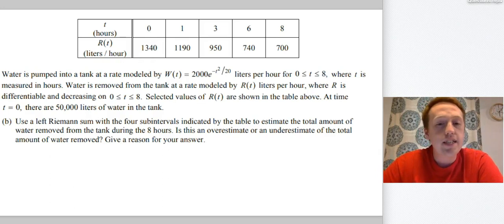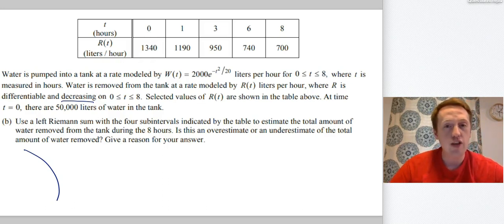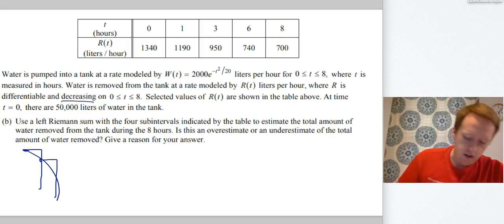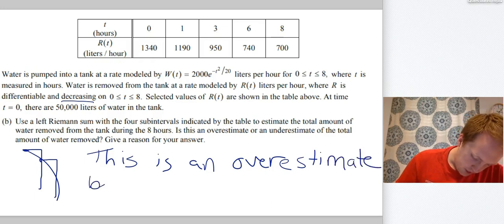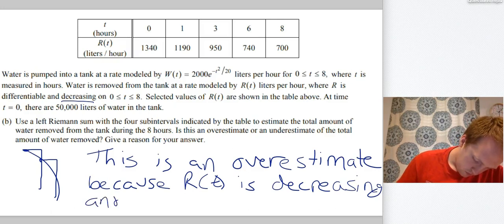Now I'm going to erase this stuff because I have another part to answer. The next thing it asked was, is this an overestimate or an underestimate of the total amount of water removed? So what we need to do is think about left Riemann sums and we know that R of T is decreasing. It says decreasing right here. So I always sketch this out for myself. So I'll draw some decreasing function. It doesn't really matter what it is as long as it's decreasing. Left Riemann sums should have their upper left corner touching the function.